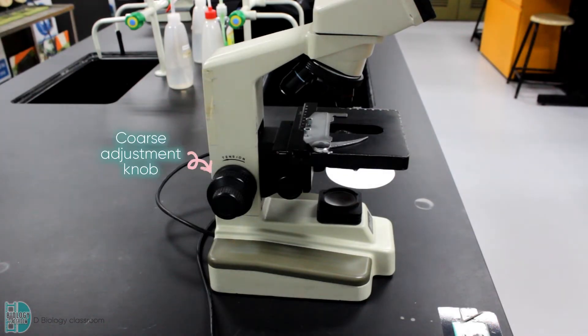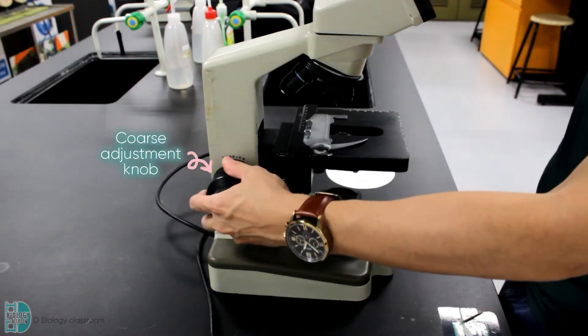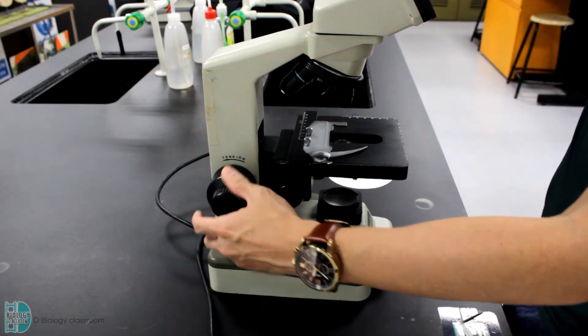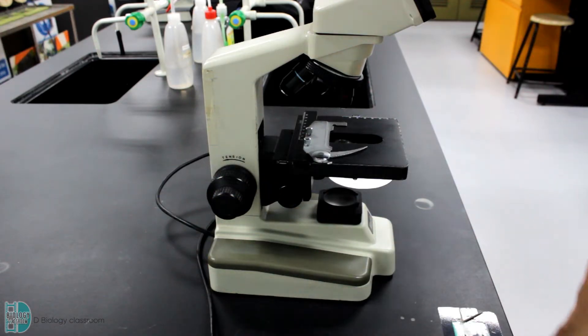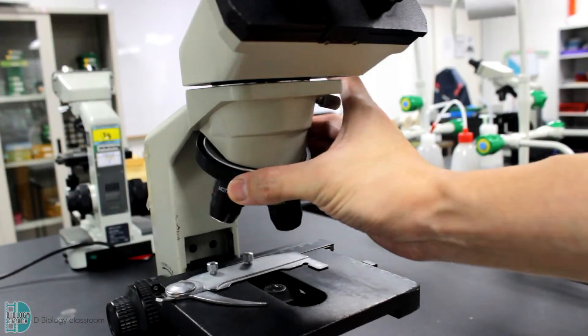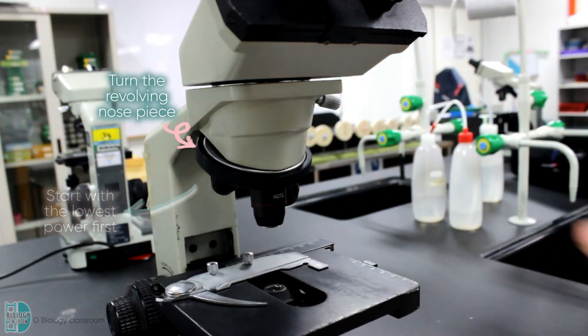Use the coarse adjustment knob to lower the stage. You should move it all the way to the lowest position before you start. Then, turn the revolving nosepiece to choose the objective lens with the lowest power available to you.